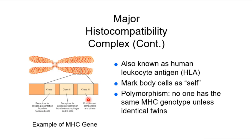No one has the same MHC — it's genetically determined. If somebody gives me a liver, that liver carries the MHC of the donor, so my body may identify it as other. Unless you're an identical twin, your immune system will recognize a transplanted organ as foreign. The closer the genetic match, the less your immune system recognizes it as other — which is why organ donation requires very specific matching.